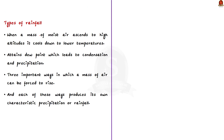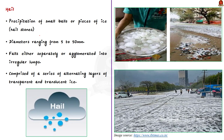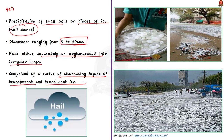The fourth form is hail. Hail is the precipitation of small balls or pieces of ice, otherwise called hailstones, with diameters ranging from 5 to 50 mm. They fall either separately or agglomerated into irregular lumps. Hailstones are comprised of a series of alternating layers of transparent and translucent ice. With this final type we have finished discussing the types of precipitation.